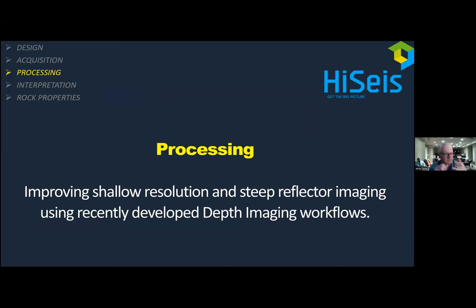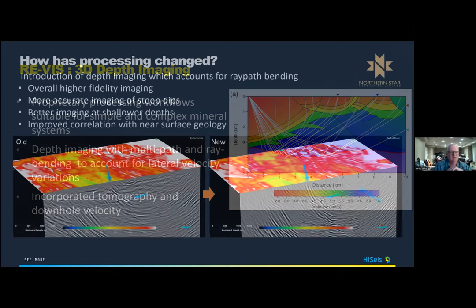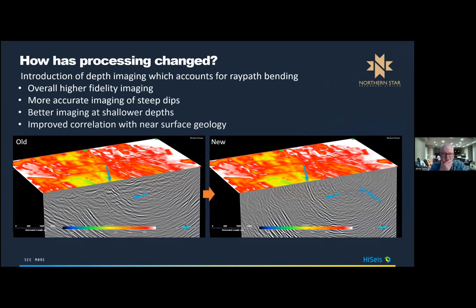Once you've designed and acquired the survey, you process it. In HiSeis, the big development in processing is depth imaging, which is really appropriate for hard rock domains where you have hard, fast rocks in very complex systems. Depth imaging helps with multi-pathing, ray bending, and velocity variation — things we commonly see in hard rock environments.